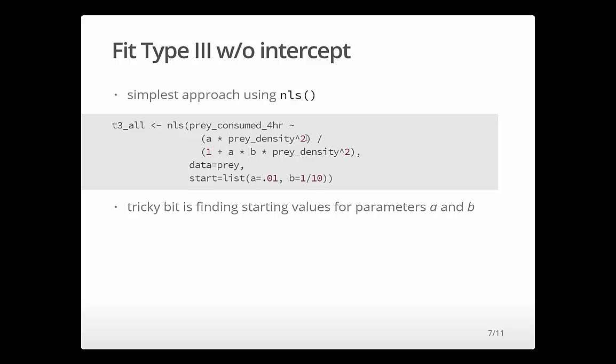Now we have a nonlinear function and we actually literally type out the function that we want. So A times prey_density squared. I'll put that in brackets so that it makes sure that gets calculated together, divided by, and then again in brackets, 1 plus A times B times prey_density squared. Okay, so it's just literally described the nonlinear function using R code and put that into the formula. Then you tell it where the data frame is, where the data are.